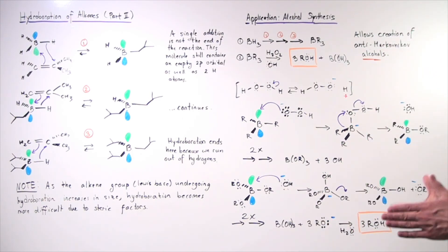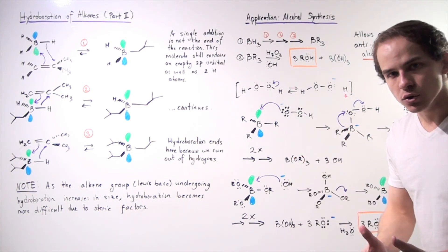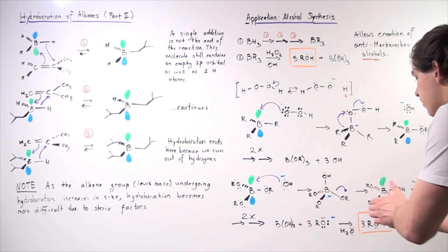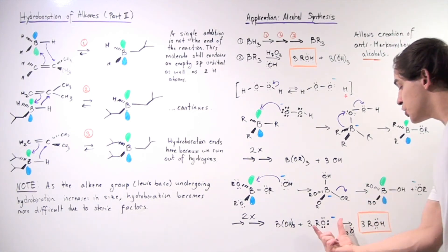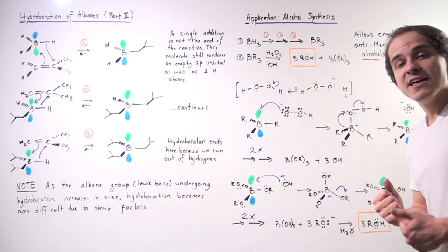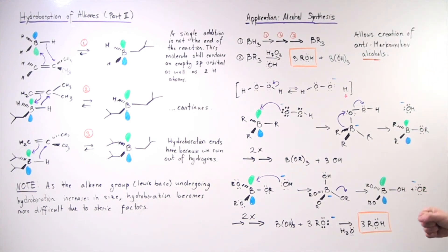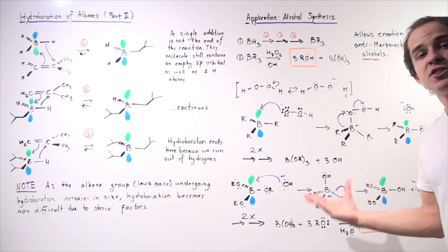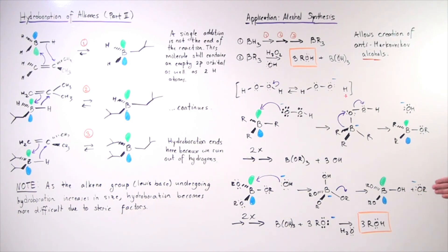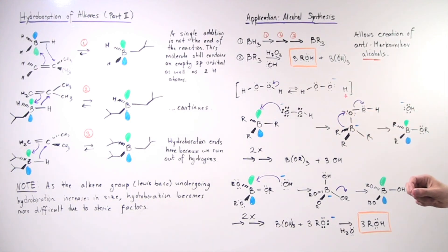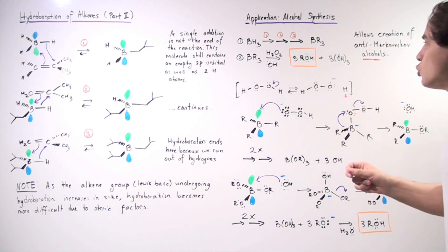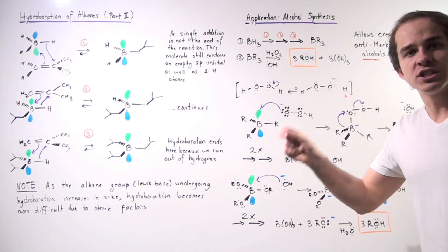Finally, we take three water molecules and place them next to our RO⁻ groups. Water, acting as a good acid, donates a proton to RO⁻, forming ROH. This happens three times, and we produce our anti-Markovnikov alcohol product — with the hydroxide group attached to the least substituted carbon.